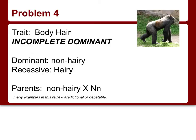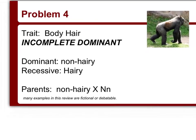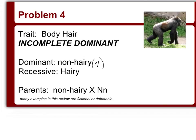In this example, we're going to look at an incomplete dominant trait of body hair. In actuality body hair is controlled by multiple genes and alleles, but we're simplifying it here. The dominant form is non-hairy (capital N) and the hairy form is lowercase n. We're doing two heterozygous parents. With incomplete dominance, a heterozygous individual is going to be partial or medium hairy, since heterozygous individuals show a blended phenotype.